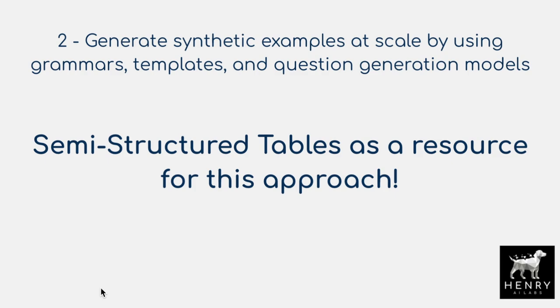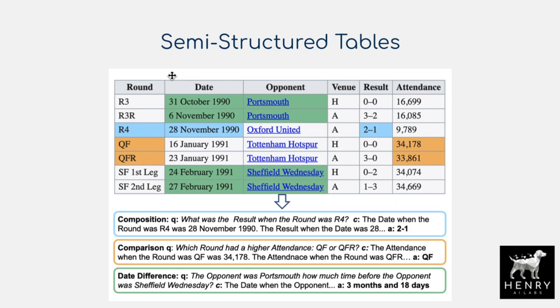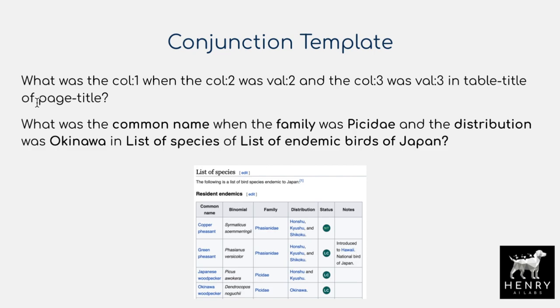In this paradigm of generating synthetic examples, this paper proposes using semi-structured tables as the resource for sourcing training data. Looking through Wikipedia, you can automatically extract symbolic queries — composition, comparison, difference — from these tables and convert them into sentences. Similar to a recent paper that turned knowledge graphs into sentences and used them to embed knowledge into language models, this approach embeds table knowledge into text sentences and trains through the same interface as any other data.